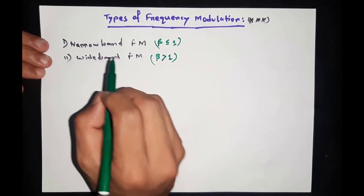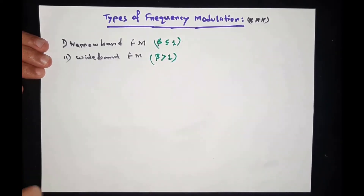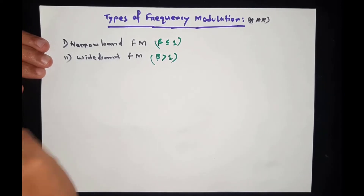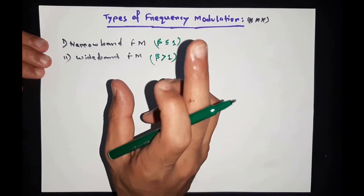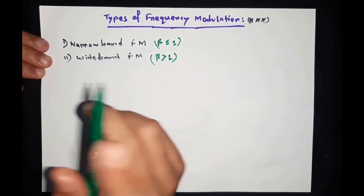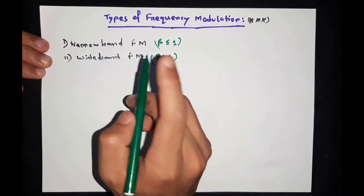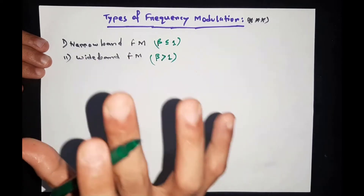In narrow band frequency modulation, there are three components: the carrier, the upper sideband, and the lower sideband. However, the lower sideband is negative.